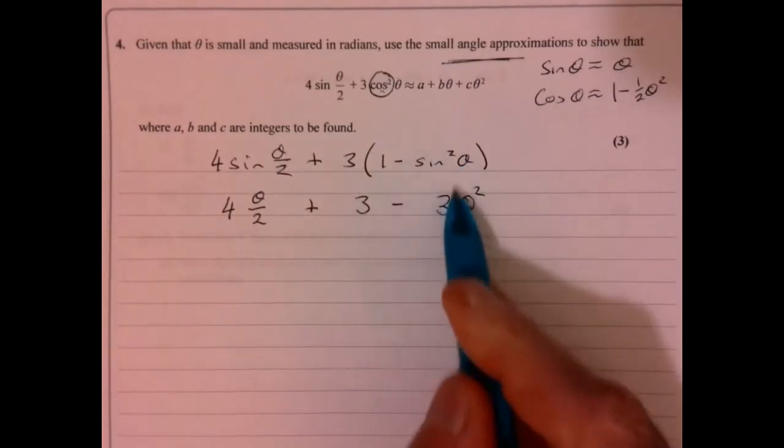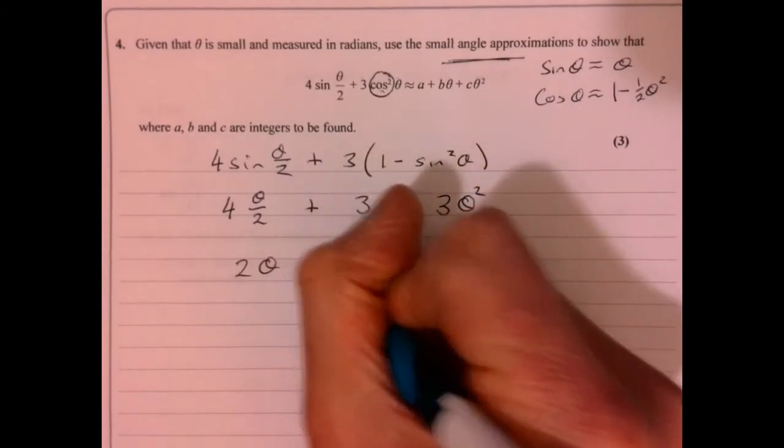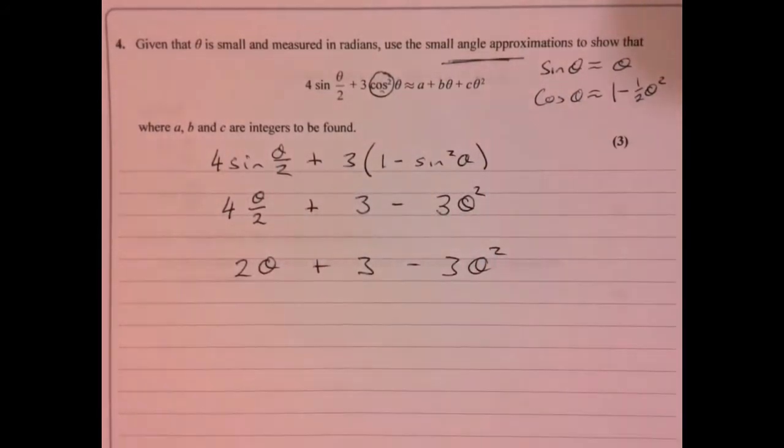I've kind of done that in one step there. So this is two theta plus three minus three theta squared. There we are.